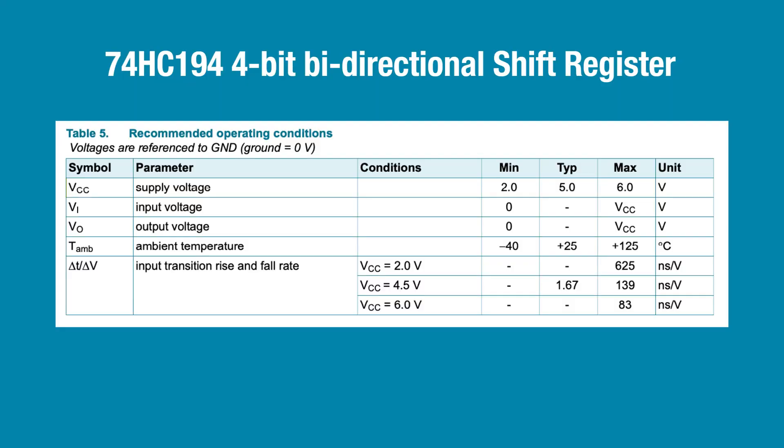This chip can transfer data by serial in parallel out, or parallel in parallel out. I'll start by showing you how to use the serial inputs to shift data to the parallel outputs. Let's look at the datasheet to see what supply voltage we need. The supply voltage should be a minimum of 2 volts and a maximum of 6 volts. Rather than using the typical 5 volts, I'm going to run it off of 4.5 volts so it could be run off of a battery pack.